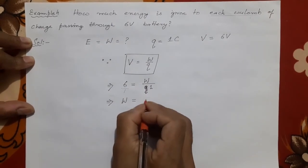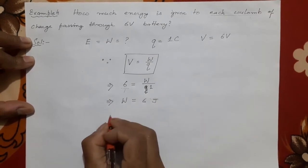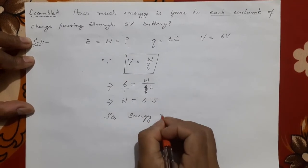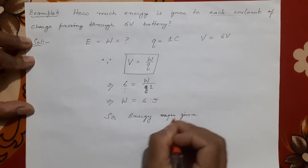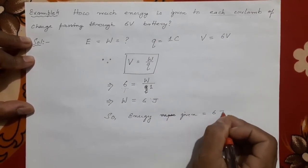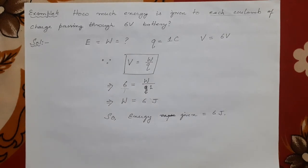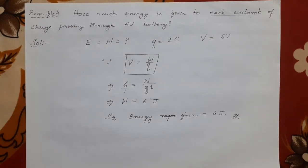Six ones are six, so the work done — and therefore the energy — is 6 joule. Work done and energy have the same unit, joule. So 6 joule is your answer. This way we have solved four different numericals based on the formula V = W / Q. That is all for the numerical section. Thank you.